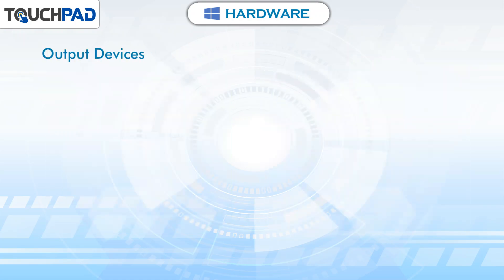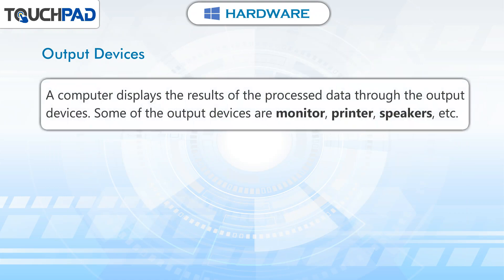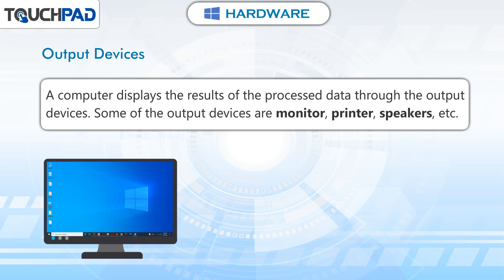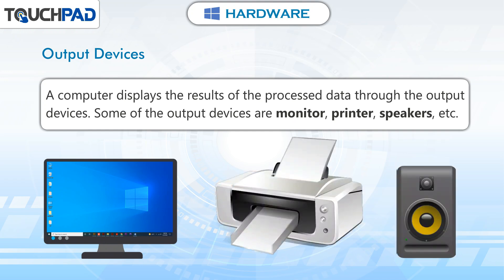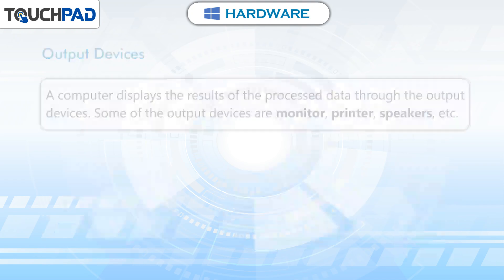Output devices. A computer displays the result of the processed data through the output devices. Some of the output devices are monitor, printer, speakers, etc.